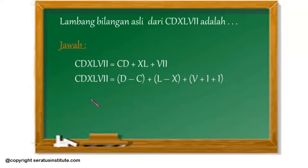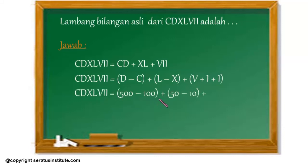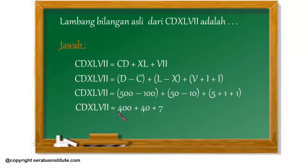Nah sekarang kita masukkan nilainya. CDXLVII sama dengan 500 dikurangi 100, ditambah 50, dikurangi 10, ditambah 5, tambah 1, tambah 1. Jadi CDXLVII sama dengan 400, ditambah 40, ditambah 7. Sehingga CDXLVII sama dengan 400 ditambah 47.